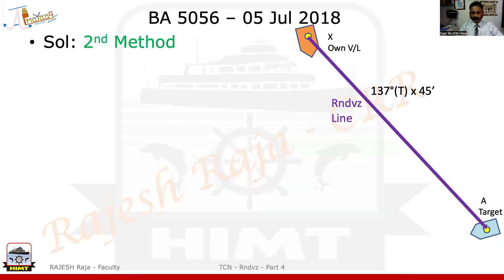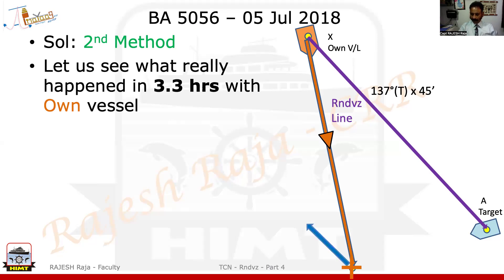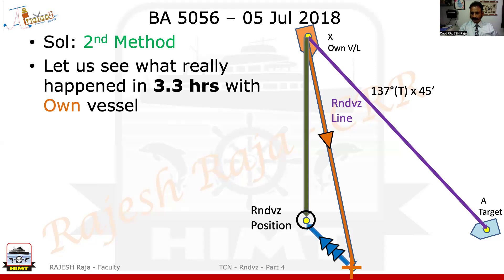Now let us see what happened to own vessel for the same 3.3 hours. We have already found out the answers for CMG and CTS for own vessel. So I am drawing the CTS for own vessel, which was 164 degrees, for 3.3 hours. What you achieve is the DR for own vessel. The current is still the same, and this is the final rendezvous position — I can now draw my CMG. So this is my triangle for the full 3.3 hours.